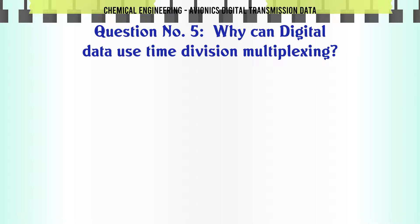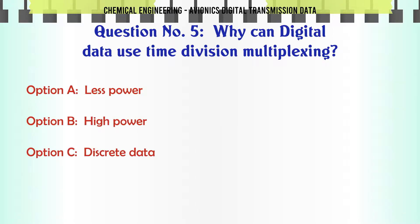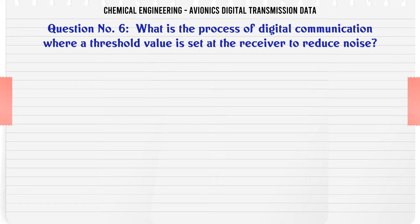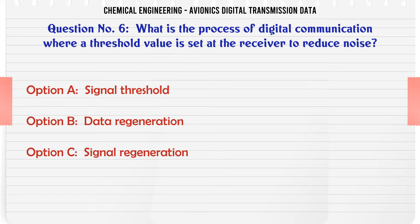Why can digital data use time division multiplexing? A: Less power. B: High power. C: Discrete data. D: Continuous data. The correct answer is Discrete data.